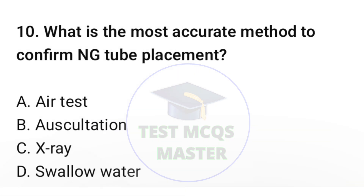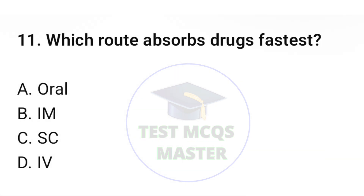Question number ten: What is the most accurate method to confirm NG tube placement? The correct option is C: x-ray. Question number eleven: Which route absorbs drugs fastest? The correct option is D: intravenous.